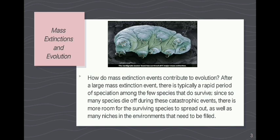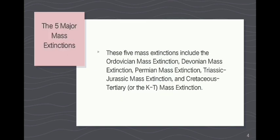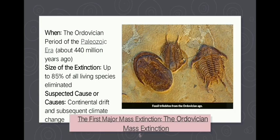Since so many species die off during these catastrophic events, there is more room for the surviving species to spread out. The five major mass extinction events include the Ordovician, Devonian, Permian, Triassic-Jurassic, and Cretaceous-Tertiary (KT) mass extinctions.